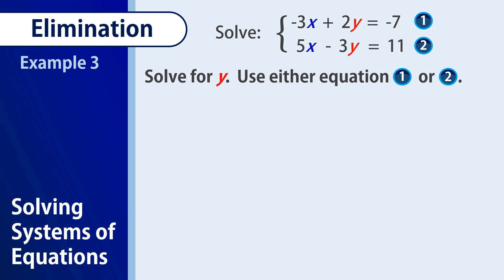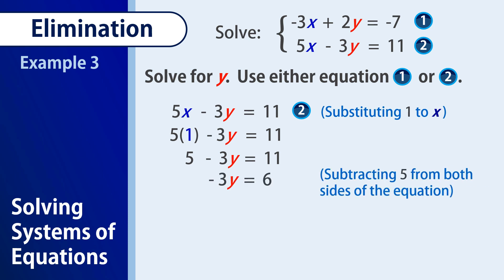We could now choose any of the two equations for substituting your value of x. To find the value of y, I will choose equation 2. 5x minus 3y equals 11. So we have 5 times 1, so that is 5 minus 3y is equal to 11. Subtracting 5 from both sides, we have negative 3y is 6. And dividing both sides by negative 3, we have 6 over negative 3 is negative 2. And that is the value of our y.